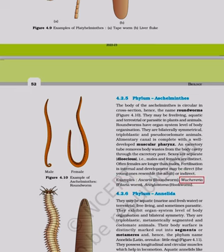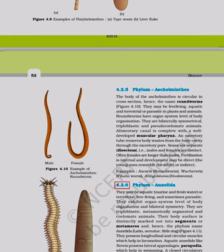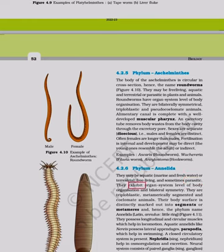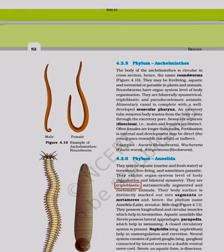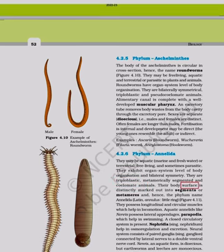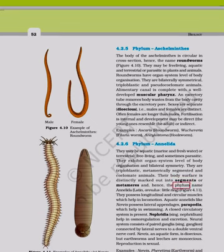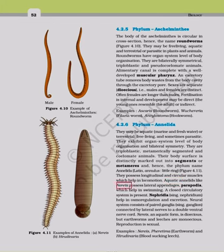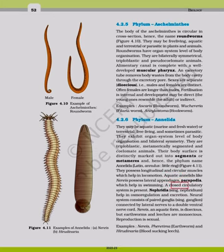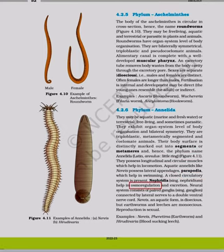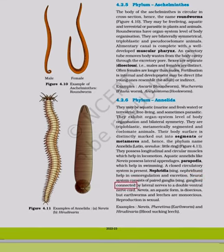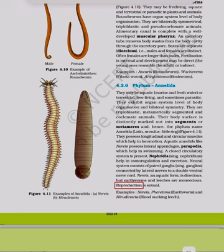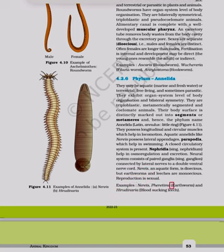Examples of Aschelminthes: Ascaris (roundworm), Wuchereria (filarial worm), Ancylostoma (hookworm). Phylum Annelida: May be aquatic (marine and freshwater) or terrestrial, free-living or parasitic. They exhibit organ system level of organization with bilateral symmetry, are triploblastic, metamerically segmented, and coelomate. Body surface is distinctly divided into segments or metameres. They possess longitudinal and circular muscles for locomotion. Aquatic annelids like Nereis have parapodia for swimming. Closed circulatory system is present; nephridia aid osmoregulation and excretion. Examples: Nereis, Pheretima (earthworm), Hirudinaria (leech).